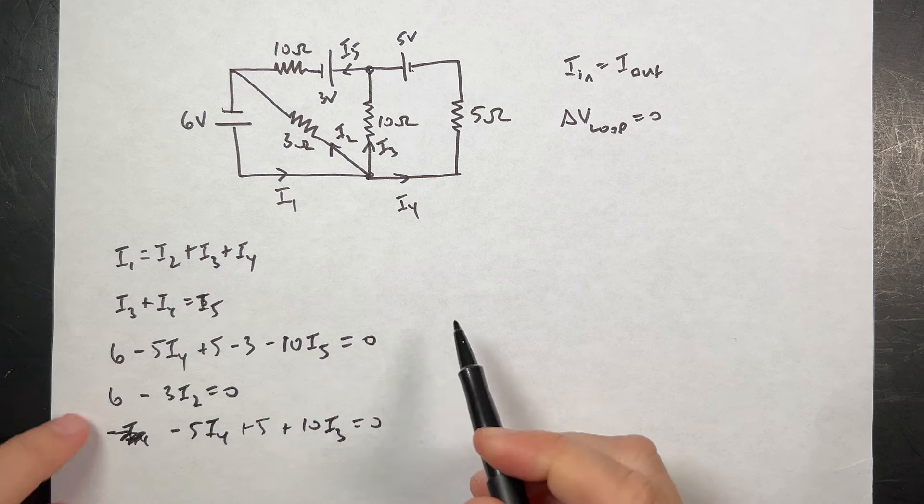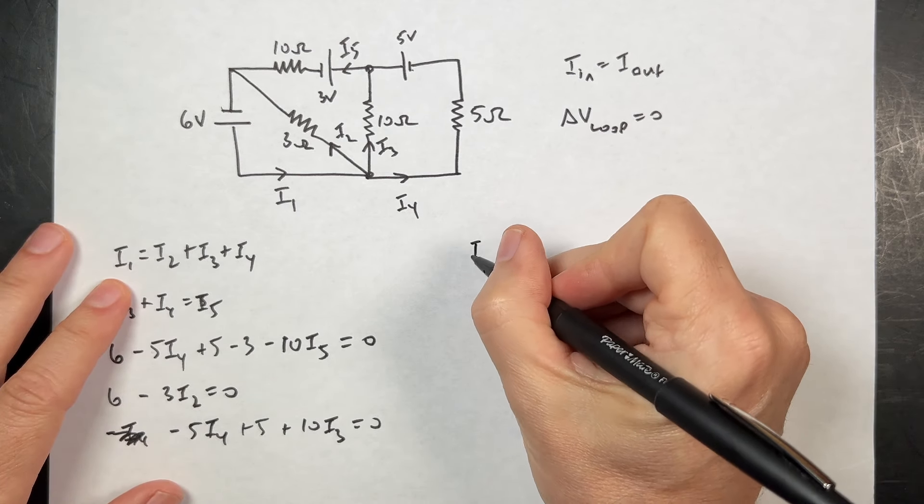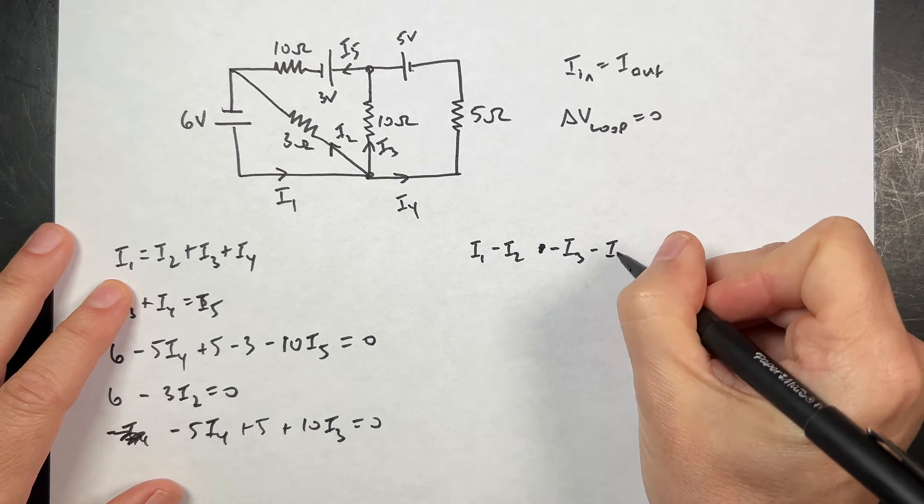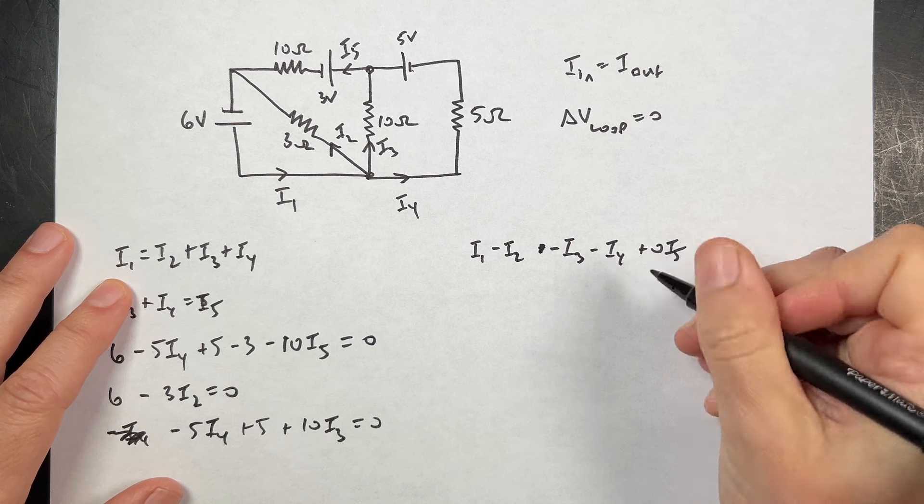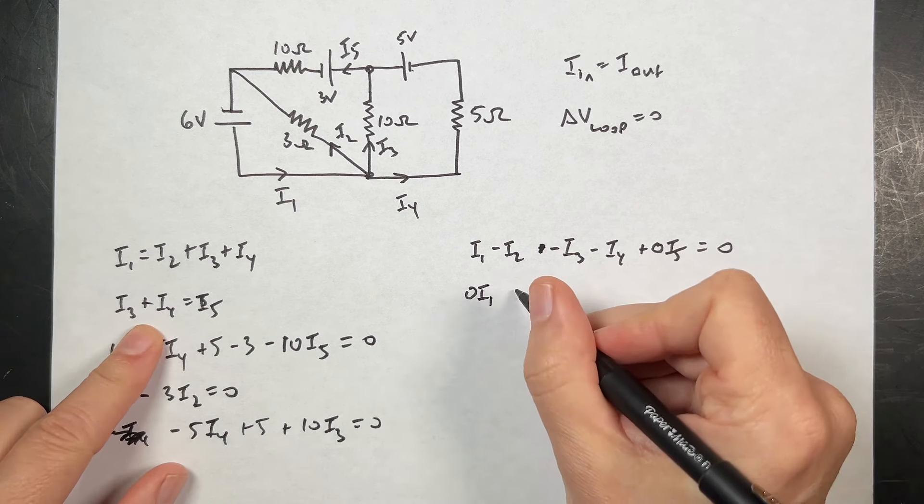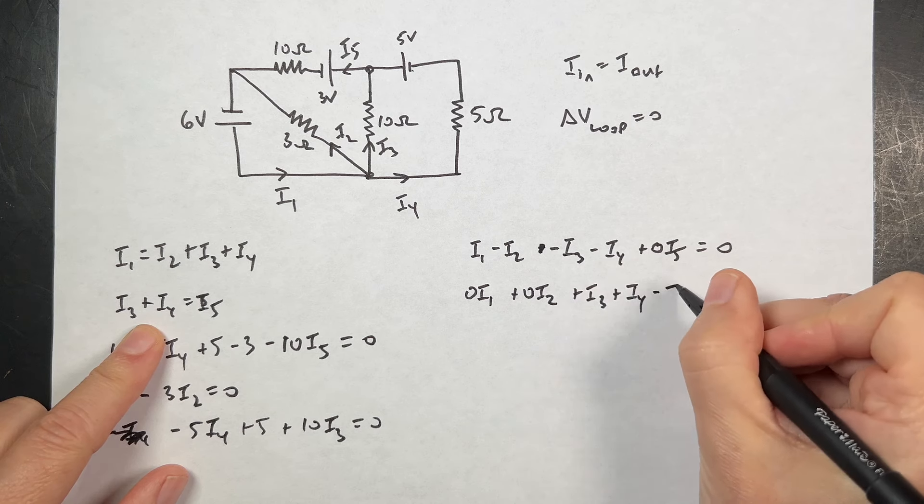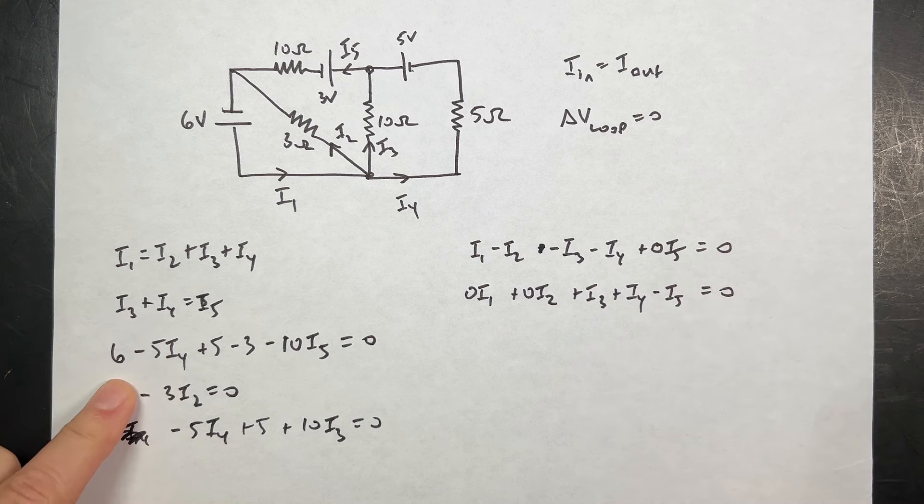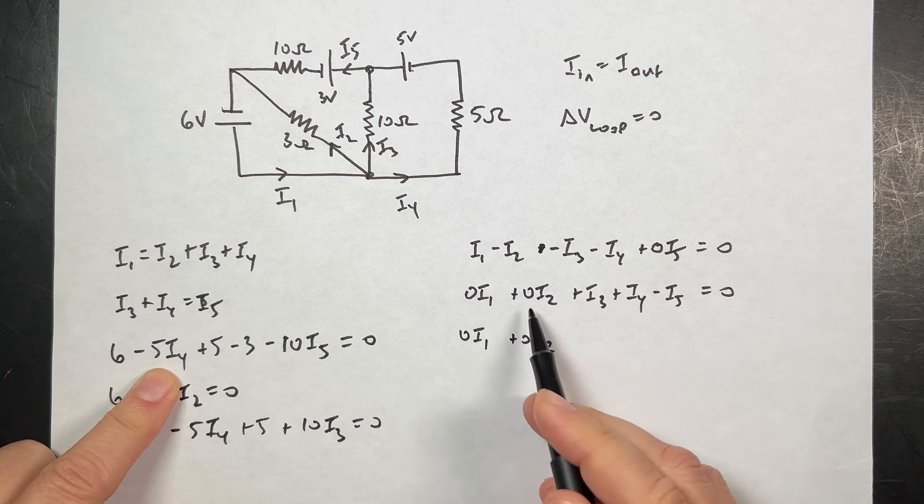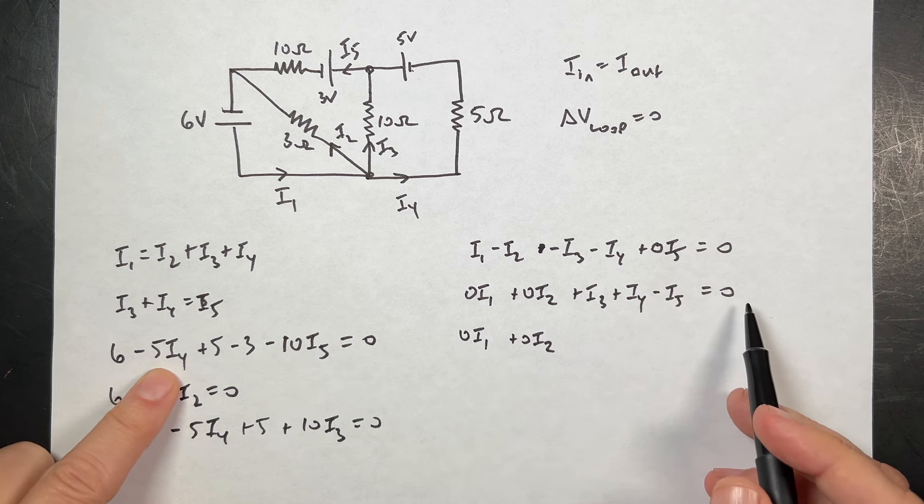There are many ways to solve this. But let me rewrite all these equations in this particular format. I'm going to write it like this. This one I'm going to put as I1 minus I2 minus I3 minus I4 plus zero I5, spoiler alert that's important, equals zero. Do you see what I'm doing here?